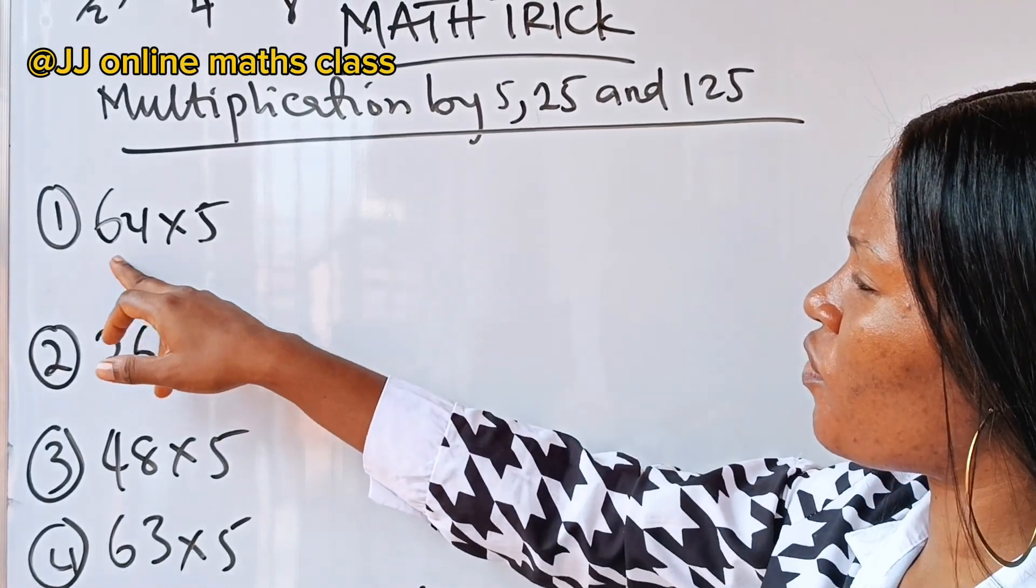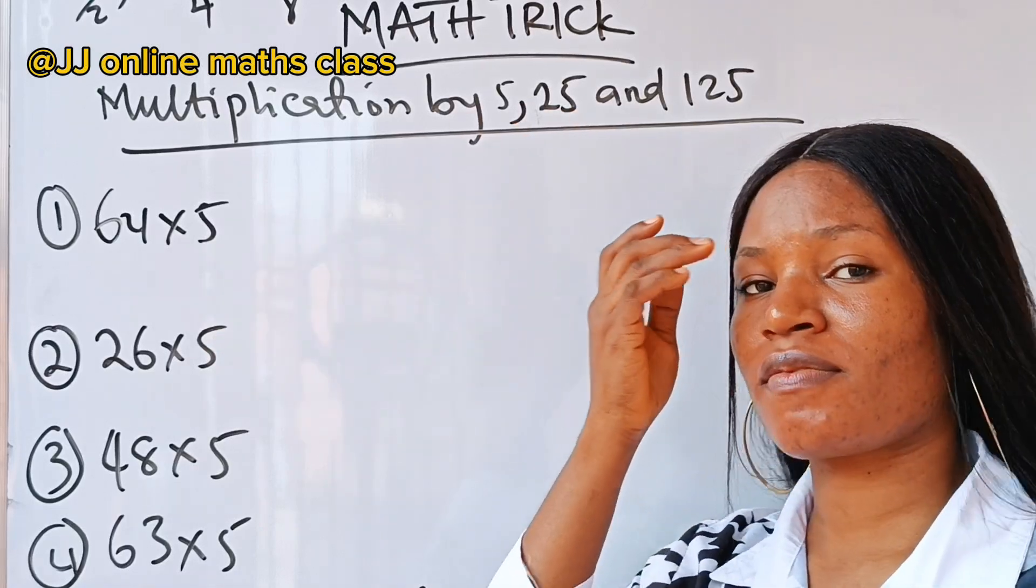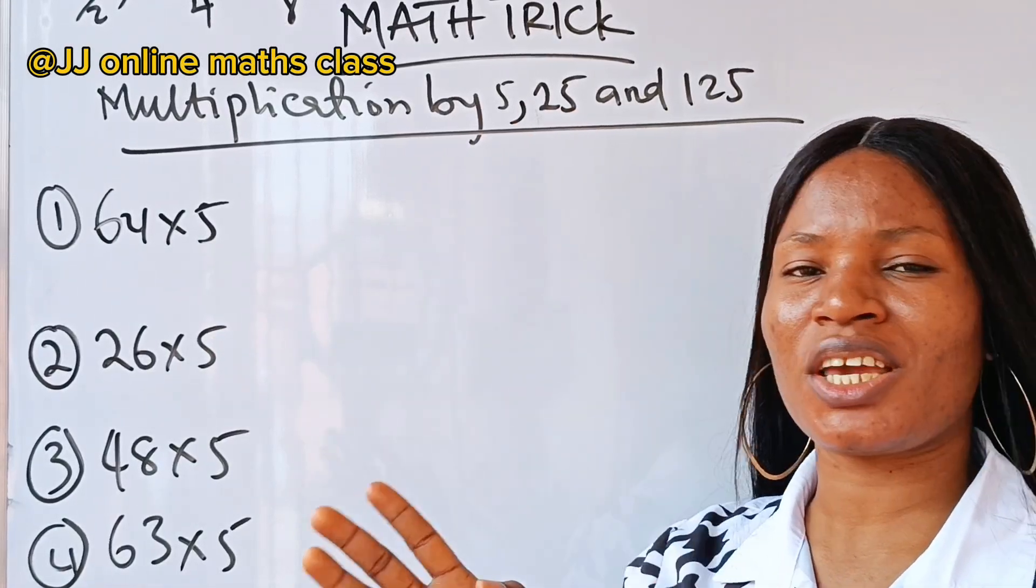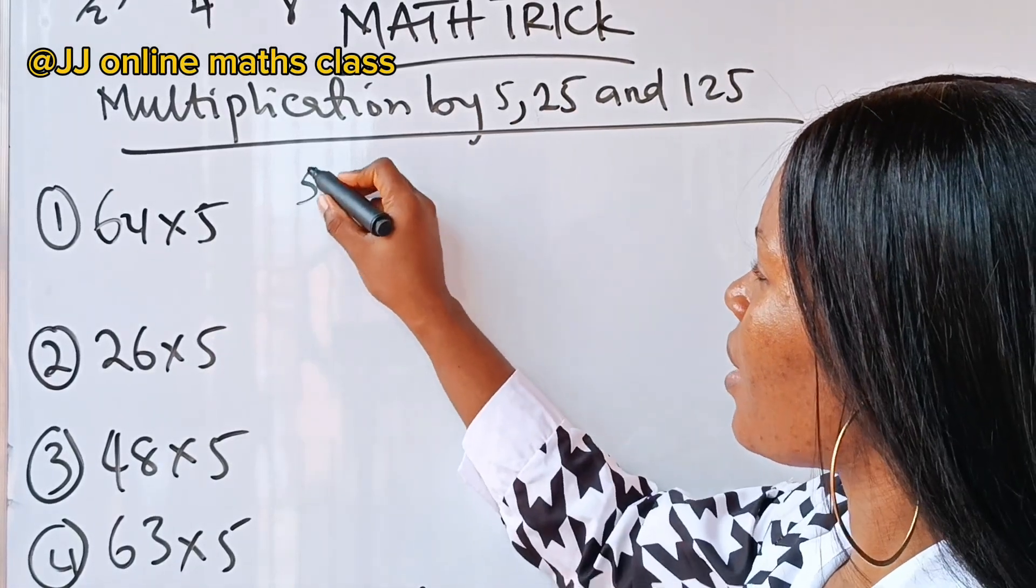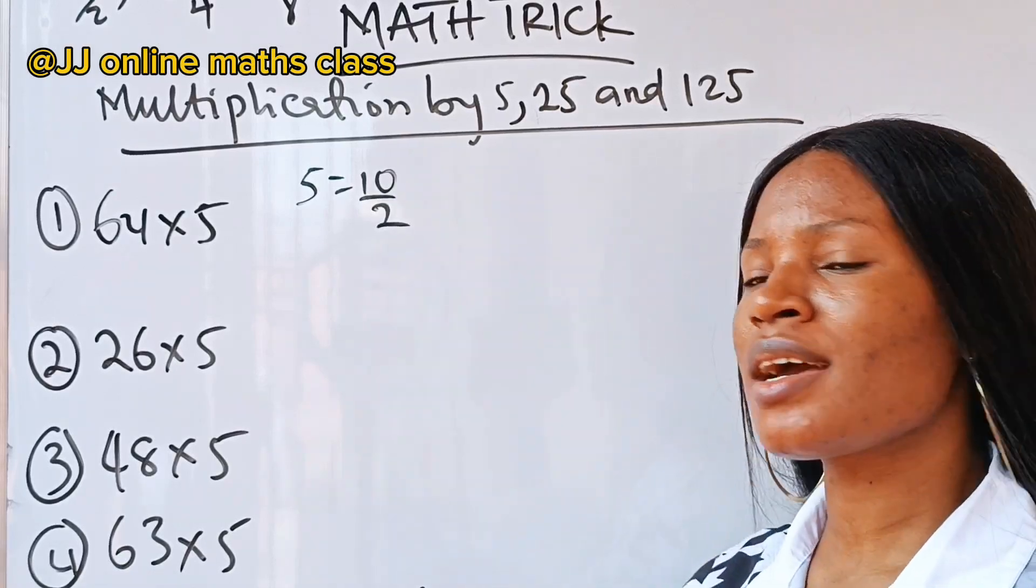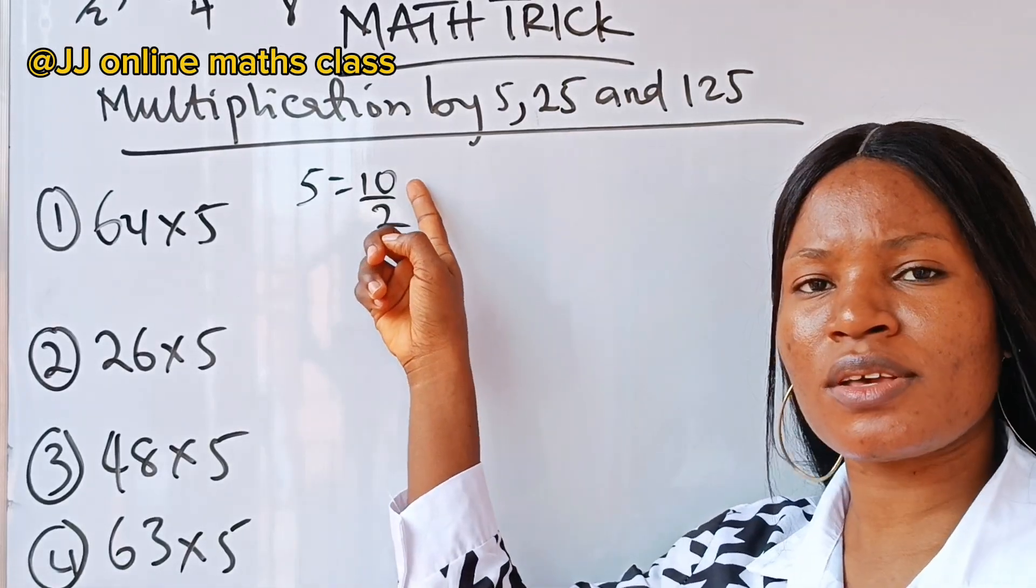We are asked to solve for 64 multiplied by 5. The only logic here is that 5 is the same as 10 divided by 2, right? And multiplication by 10 is very easy.